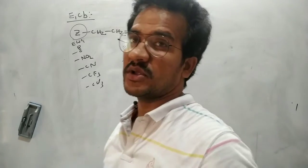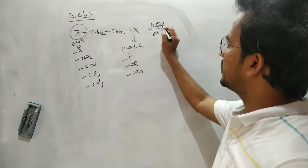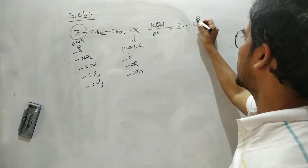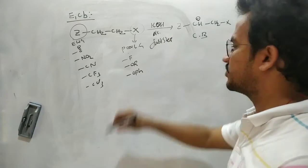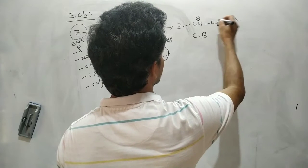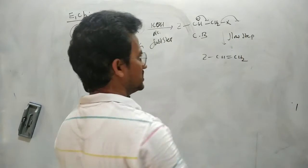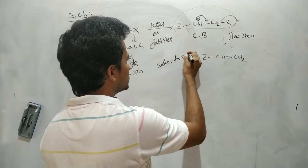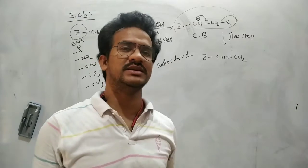E1CB stands for unimolecular conjugate base elimination. This elimination is carried out through conjugate base formation. The base removes the proton — this is an acidic proton due to the presence of electron withdrawing groups — giving ZCH⁻ and CH2. This is the conjugate base. The first step is removal of the proton. Then, the second step is leaving of the poor leaving group, giving ZCH=CH2. This is the slow step. Since only one molecule is involved in the slow step, the molecularity is one — hence it is called a unimolecular elimination reaction.